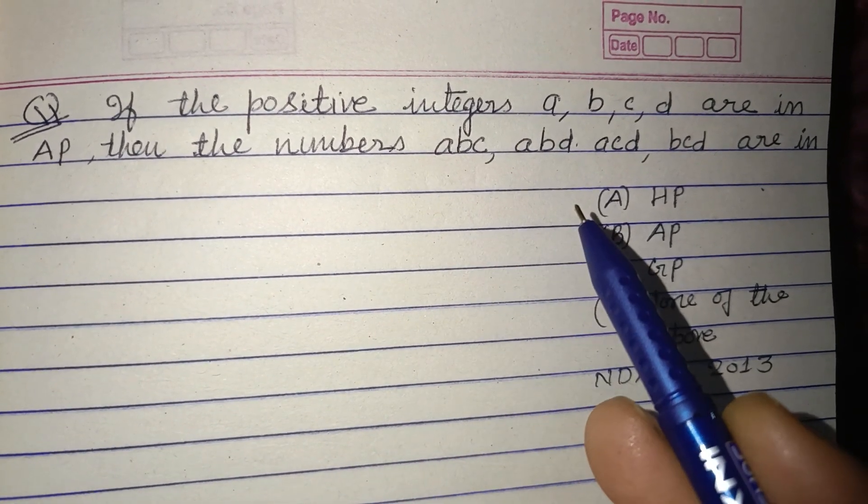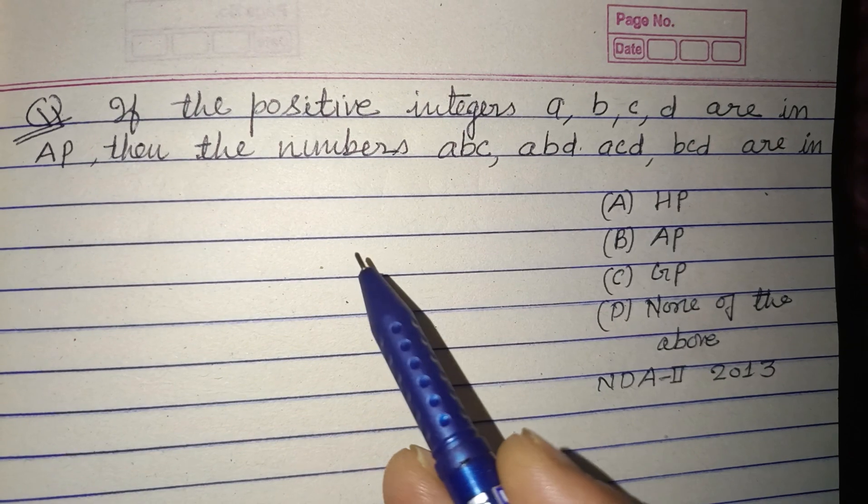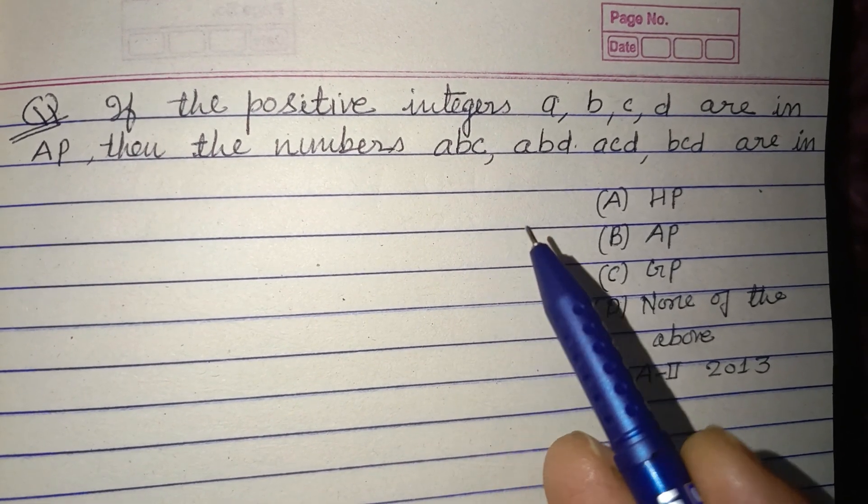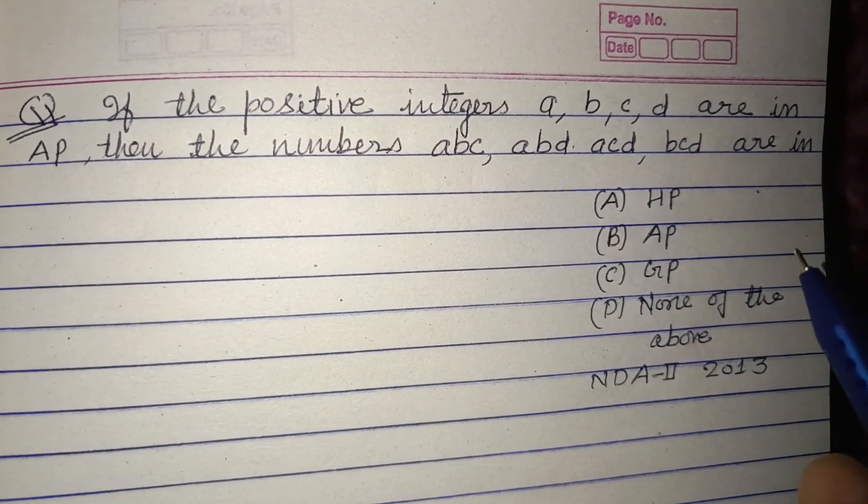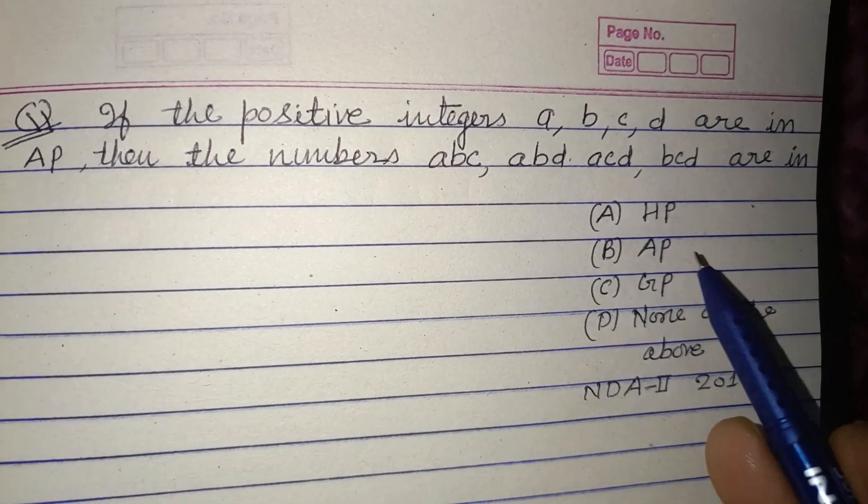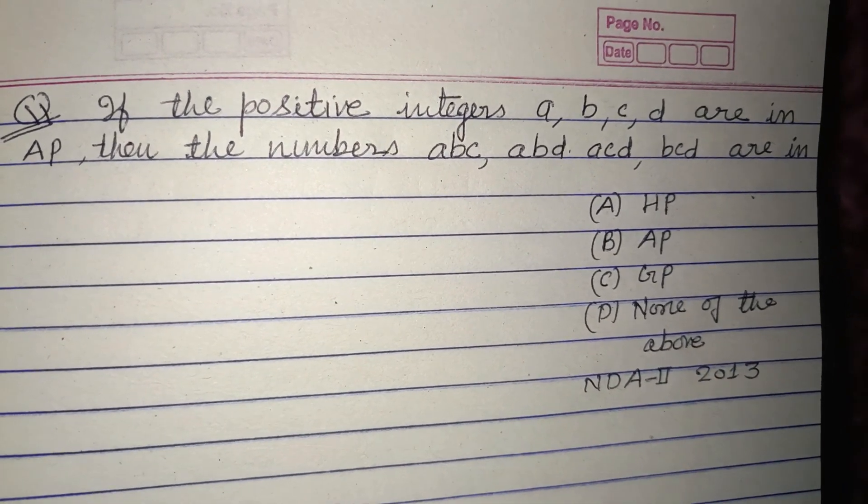If the positive integers A, B, C, D are in AP, then the numbers ABC, ABD, ACD, BCD are in which series? HP, AP, GP, or none of them.